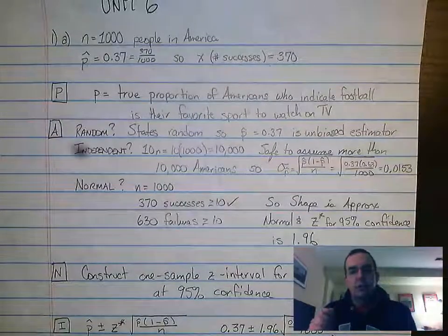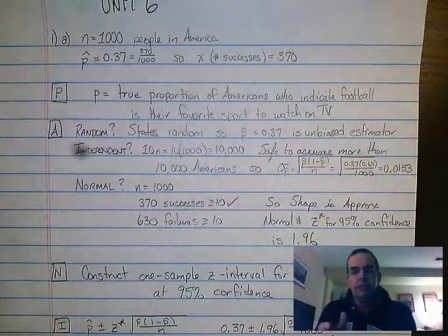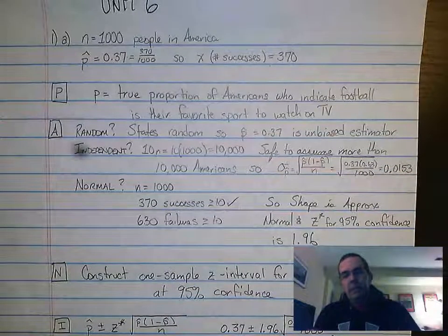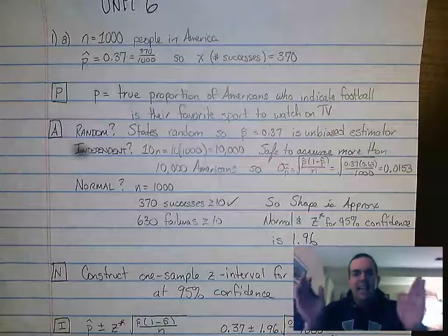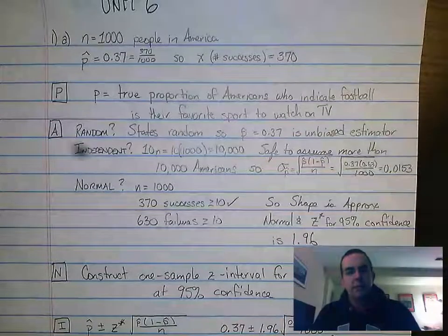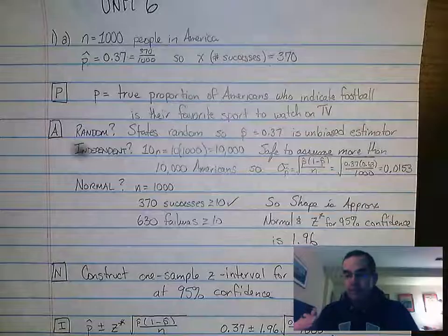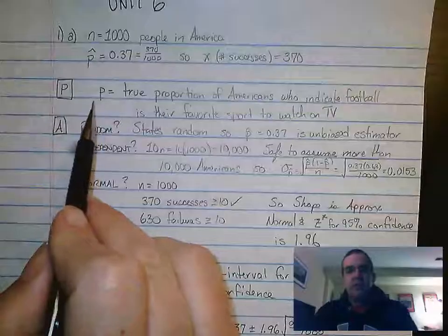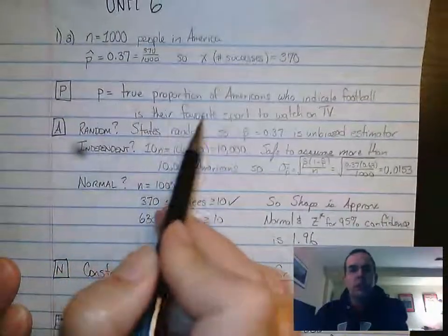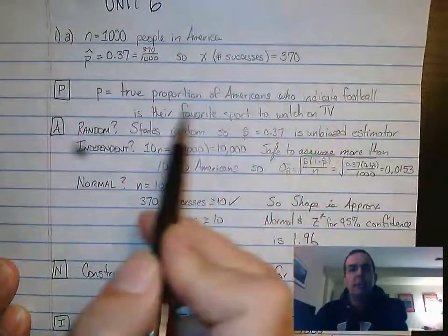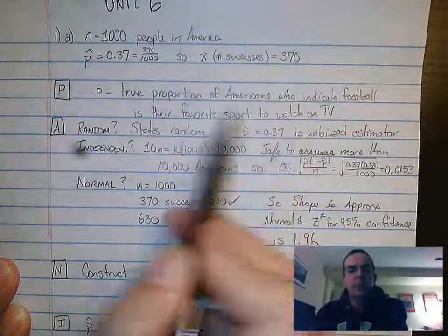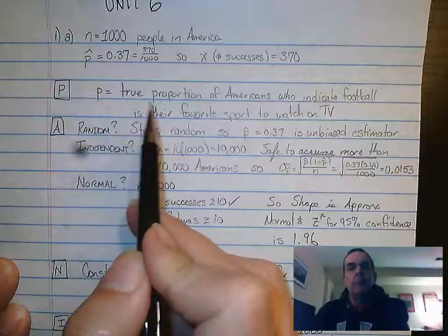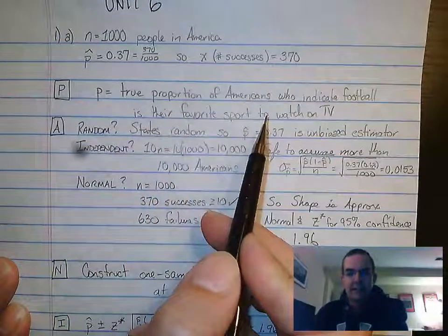The question asks you to construct a 95% confidence interval for the true proportion. So the moment you see that, we need to remember the acronym PANIC. P-A-N-I-C. And I'll walk you through how we do a confidence interval. So P, we're going to state our parameter in context. So in this case, P is the true proportion of Americans who indicate football is their favorite sport on TV to watch. So there's my parameter P, not P-hat, P. True proportion, context.